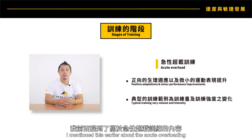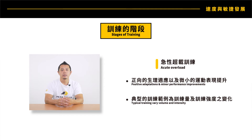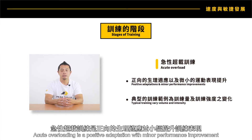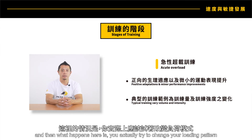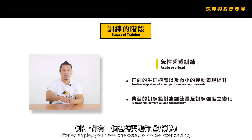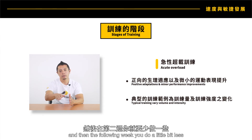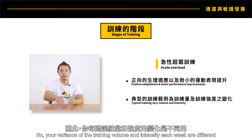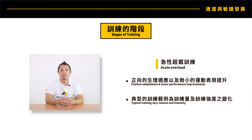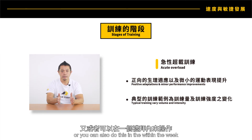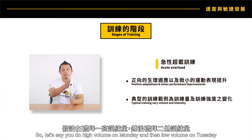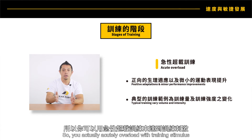The second stage is acute overloading. Acute overloading is a positive adaptation with minor performance improvement. What happens here is you actually try to change your loading pattern. For example, you have one week of overloading and then the following week you do a little bit less, so your variance of training volume and intensity each week is different. You can also do this within a week — high volume on Monday, low volume on Tuesday, then back to high volume on Wednesday — so you acutely overload with the training stimulus.